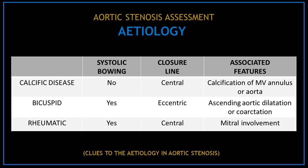Part of the aortic stenosis assessment is trying to determine the etiology. The appearance of the valve can give you clues. These characteristics will help you identify whether the stenosis is due to calcific disease, a bicuspid valve, or rheumatic valve disease.